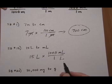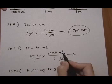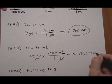So that's the unit fraction that we want to use there. Liters cancel, leaving us milliliter. 15 times a thousand: 15,000 milliliters.